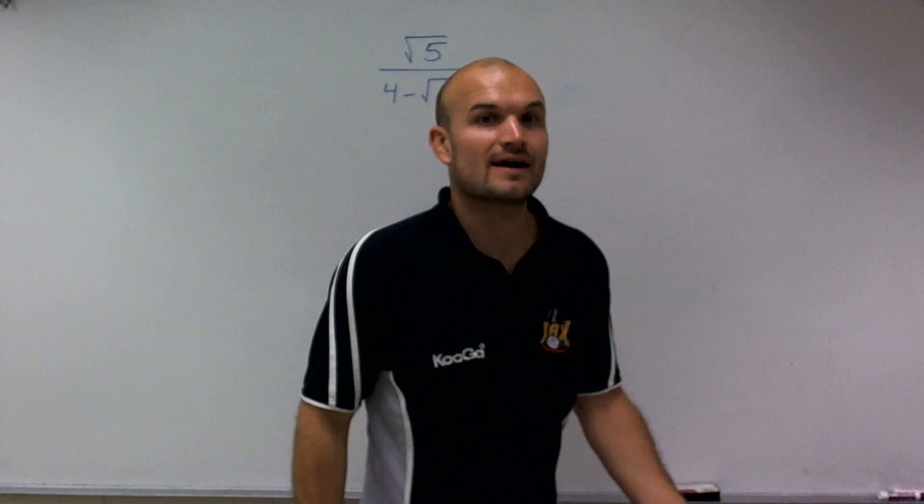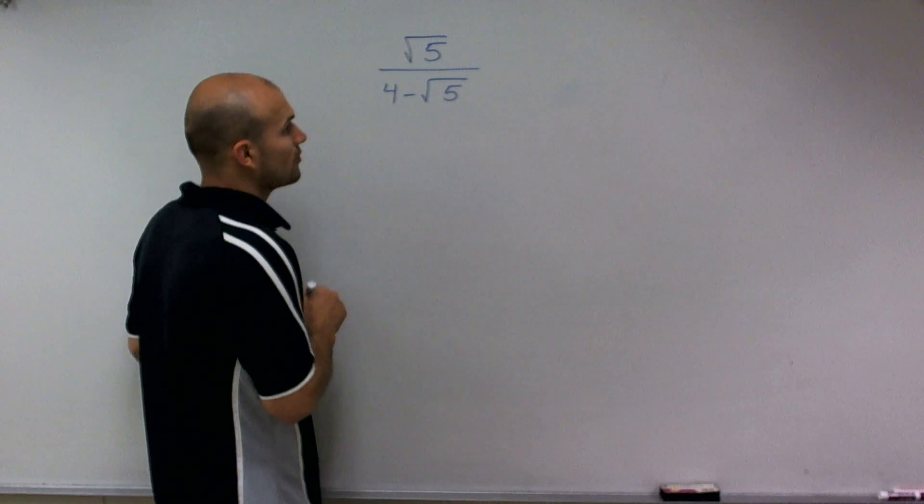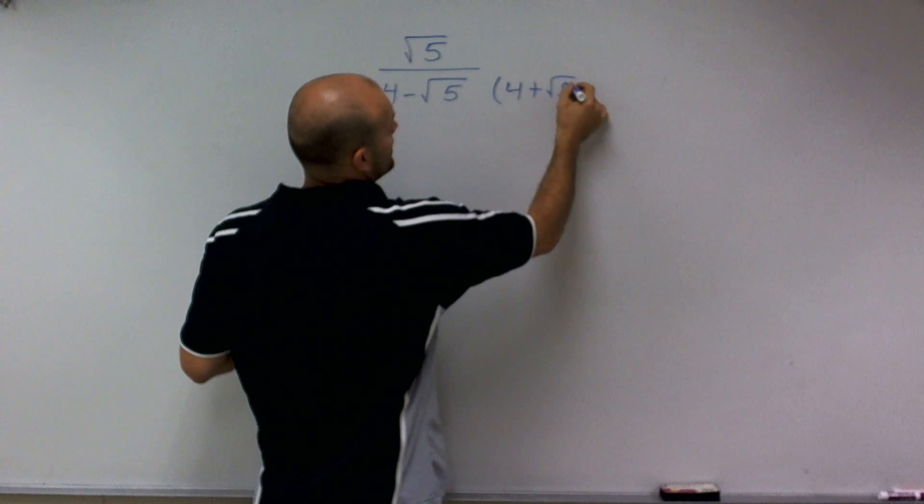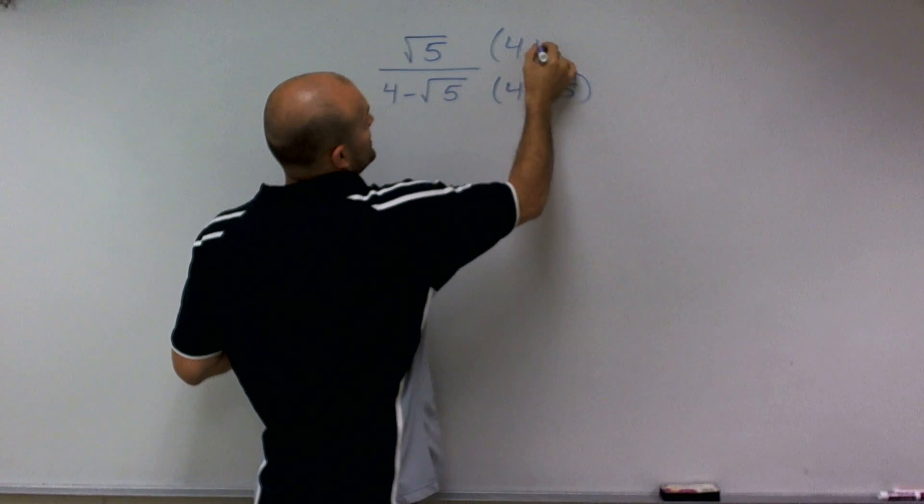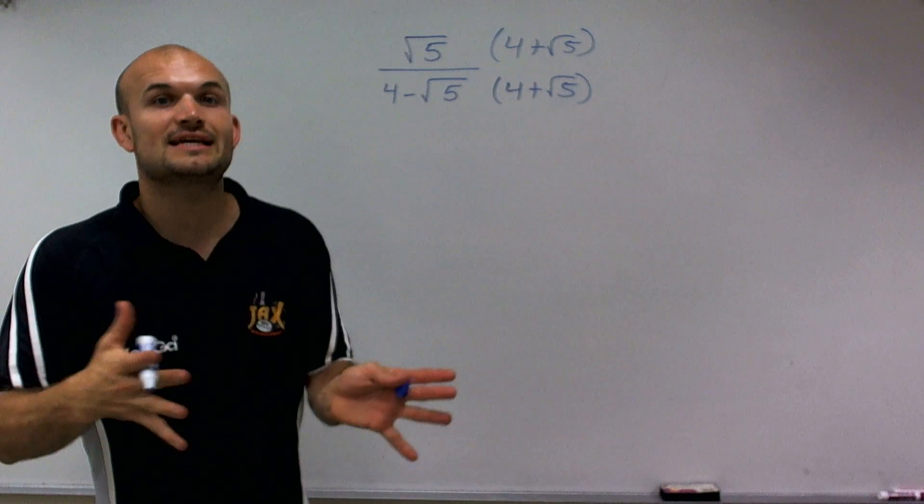So to help me simplify this, what I can do is multiply by the conjugate of 4 minus square root of 5. Well, the conjugate of 4 minus square root of 5 is 4 plus the square root of 5. And I've got to make sure I multiply that on the top and the bottom to make sure I keep equivalent fractions.